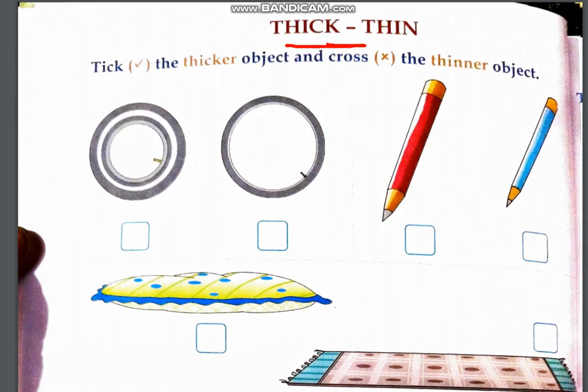So first topic is thick or thin. Thick means thick, mota. Thin means patla. Here, tick the thicker object and cross the thinner object. You have to tick the object which looks thicker, and cross the one which is thinner. In these two rings, which one is thicker? This one is thicker and this one is thinner.